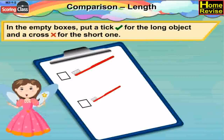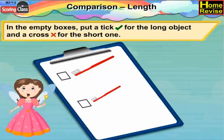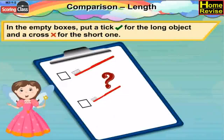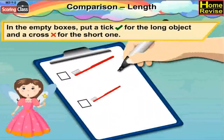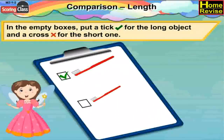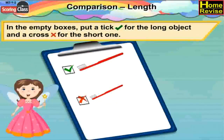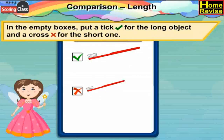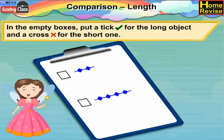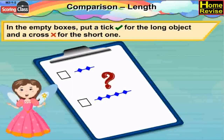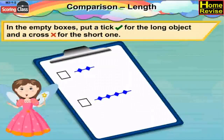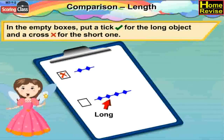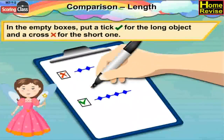We have toothbrushes. Do you brush your teeth every day? Very nice — it's a very good habit! Now, which brush is long and which brush is short? Put a tick for the first brush as it is long, and a cross for the second brush because it is short. Now for the fourth picture, which one is long and which one is short? It's a little tricky — the first picture is short, so put a cross for that, and the second picture is long, so put a tick for that.